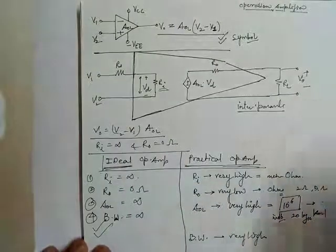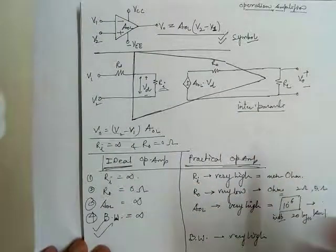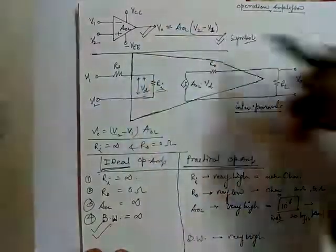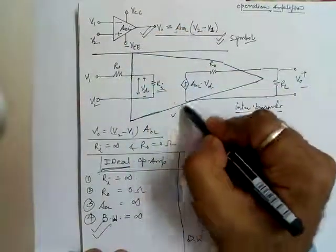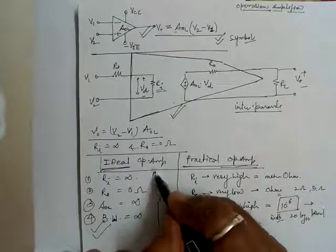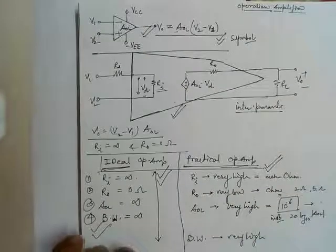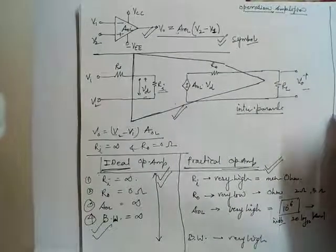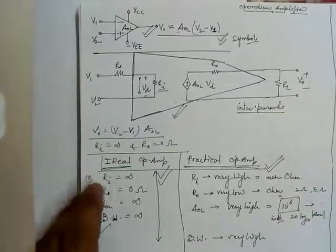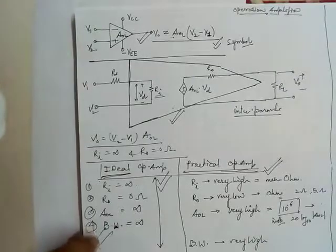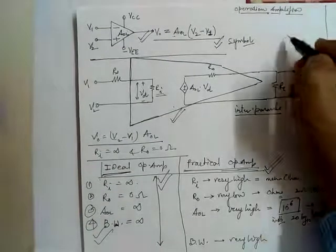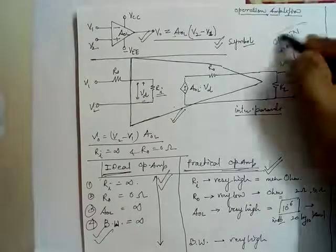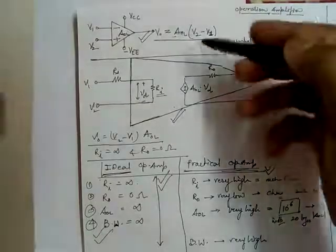These are very important basics of the operational amplifier that cannot be forgotten. The symbol, internal structure, ideal parameters, and practical parameters have been covered. Since no feedback has been attached here, this is completely an open-loop analysis. Students familiar with network theory will recognize this as an open-loop system.